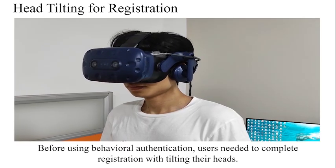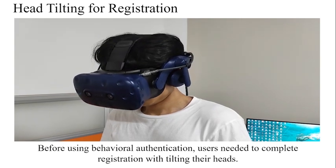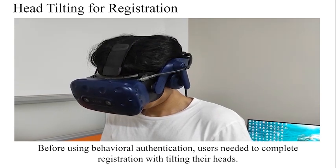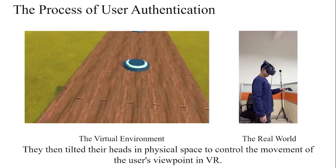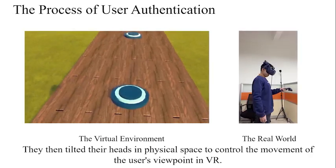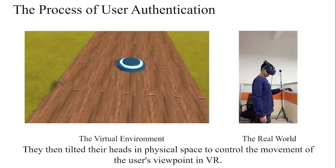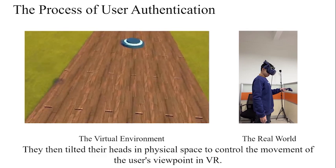Before using behavioral authentication, users needed to complete registration by tilting their heads. They then tilted their heads in physical space to control the movement of the user's viewpoint in VR.